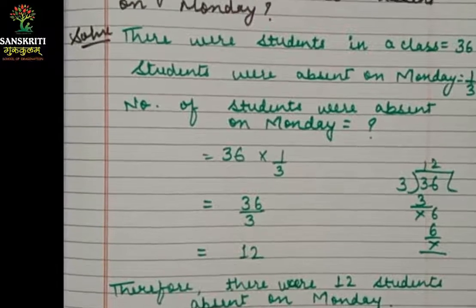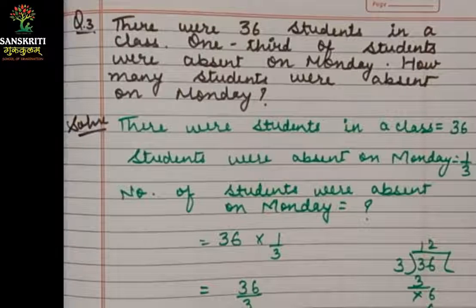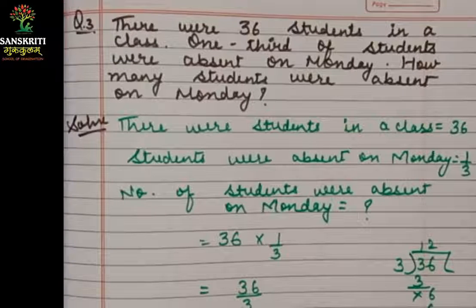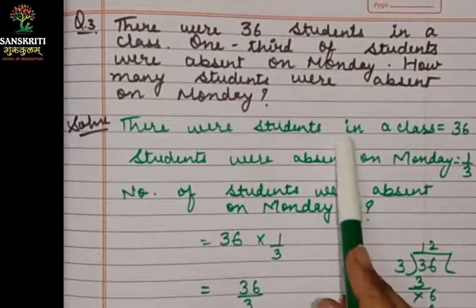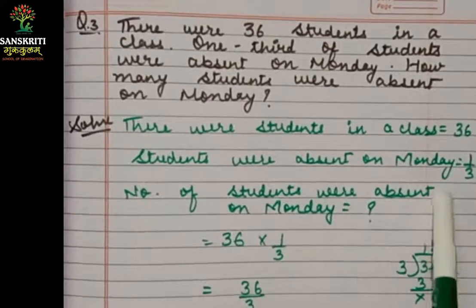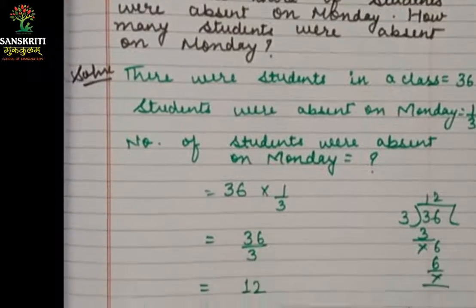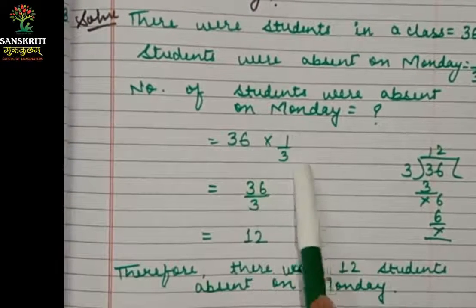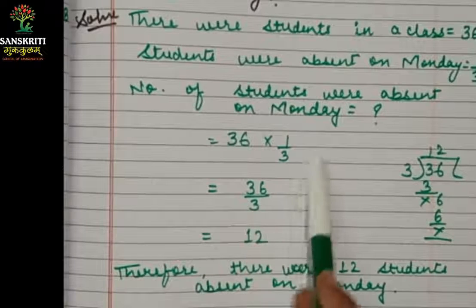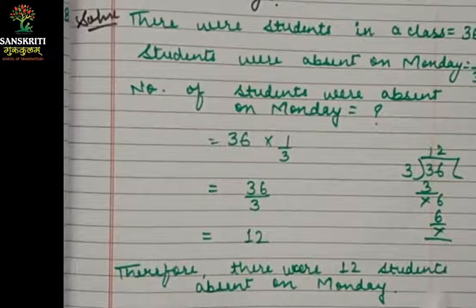In the class of 36 students, 1 by 3 were absent on Monday. We need to find the number of students absent. So: 36 multiplied by 1 by 3 means 36 divided by 3. Dividing: 3 ones are 3, 3 twos are 6, so 36 divided by 3 equals 12. Therefore, there were 12 students absent on Monday.